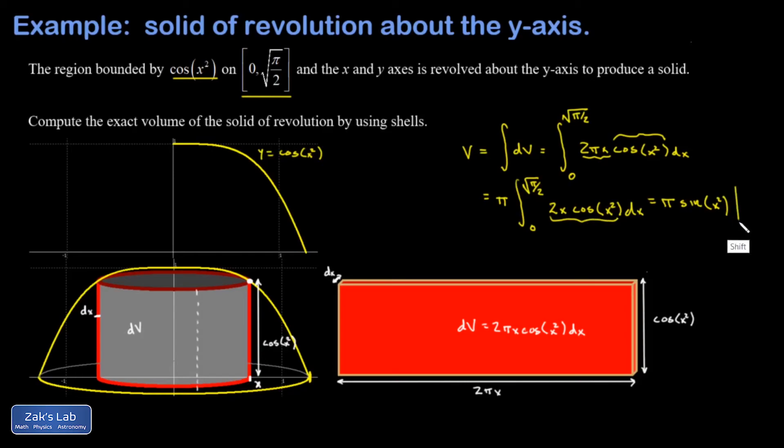I need to evaluate this thing across the endpoints, zero to root pi over two, and I end up with pi times the sine of root pi over two squared which is sine pi over two minus the sine of zero.